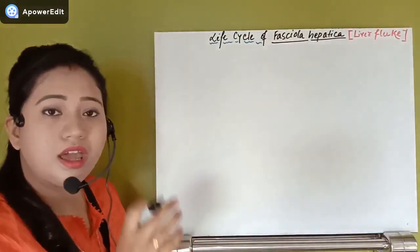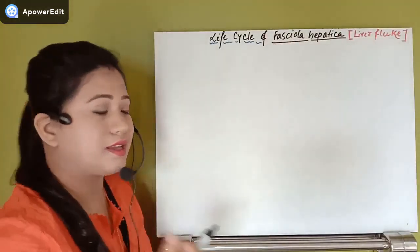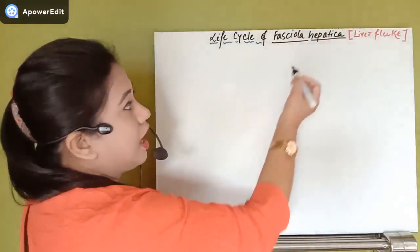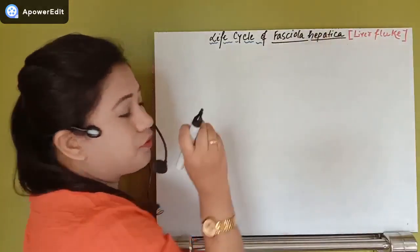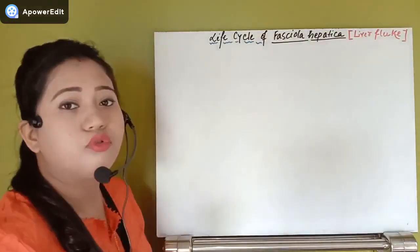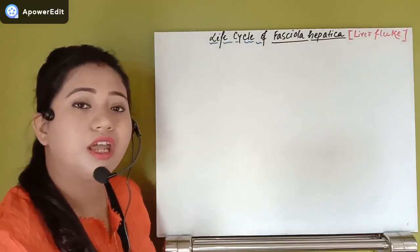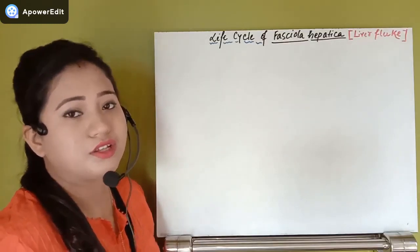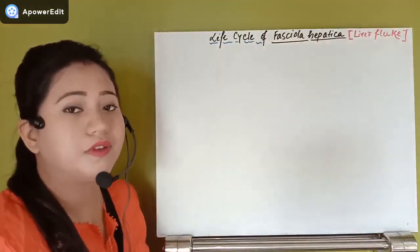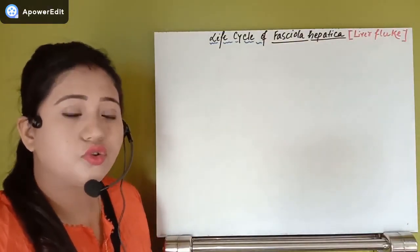In the scientific name Fasciola hepatica, 'Fasciola' is the generic name and must be underlined separately with its first letter capitalized. 'Hepatica' is the specific name and its first letter is written in small letter. In books, scientific names are written in italics, but in handwriting we underline them separately.